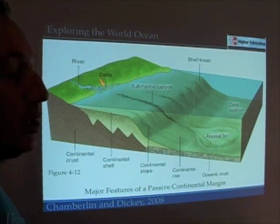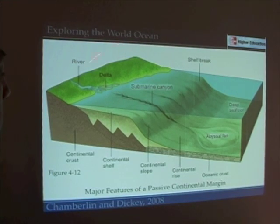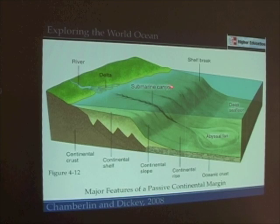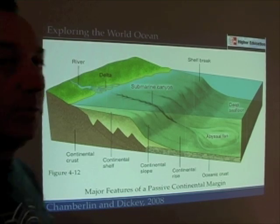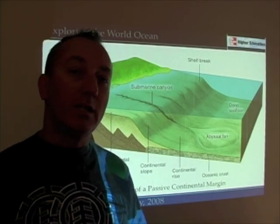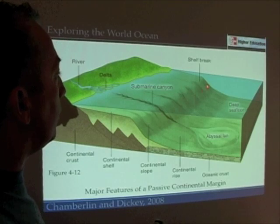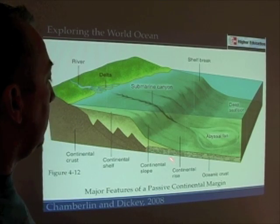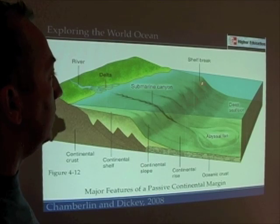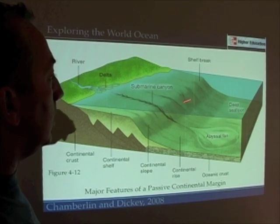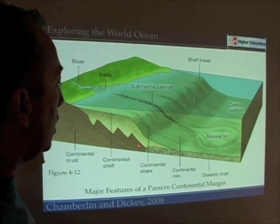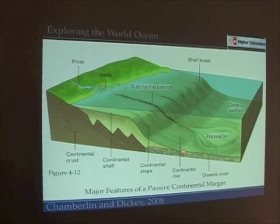Looking closely at a passive continental margin, we have the continental shelf — the gently sloping, submerged edge of the continent. This is where you stand when you're in the water at the beach. As you go further out, it suddenly descends quite steeply; that's defined as the continental slope, which is the very edge of the continent.